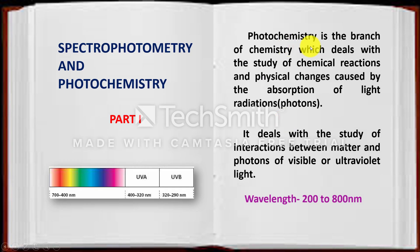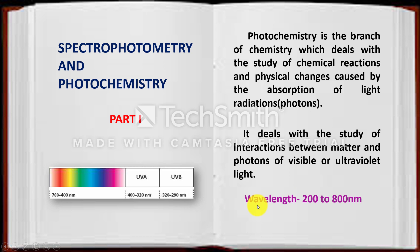Photochemistry is the branch in which we can study the chemical reactions and physical changes caused by the absorption of light or radiation. In the name itself, there is photo — photo means light. Here, we will study about the interaction between matter and photons of visible and ultraviolet light, that is the wavelength of light from 200 to 800 nanometer.